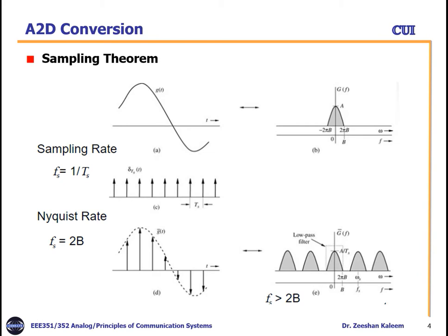For example, we have a message signal g(t) in the time domain. In the frequency domain it looks like G(f), plotted on both the omega and frequency axes. In frequency domain there is a maximum bandwidth B, and in the omega domain it is 2πB. To generate samples we use the impulse function. For the ideal case, impulses have a gap of Ts seconds, and the sampling frequency is the reciprocal of Ts, i.e., fs = 1/Ts.